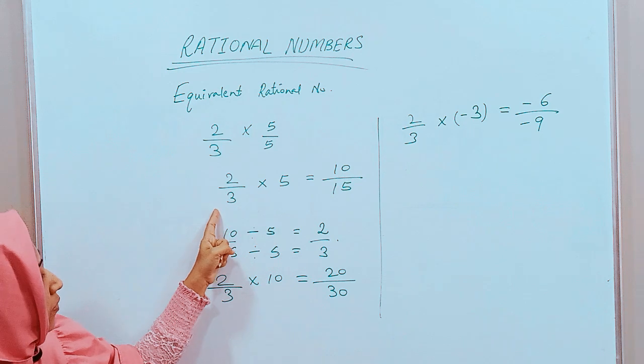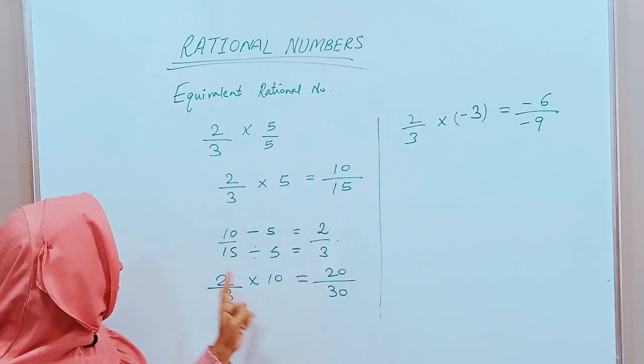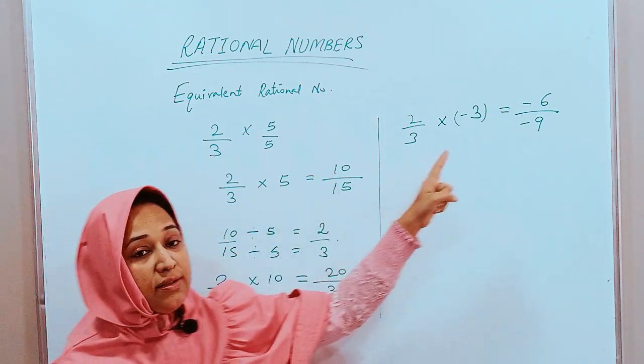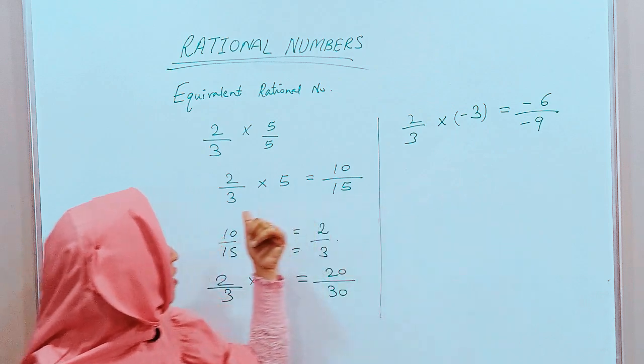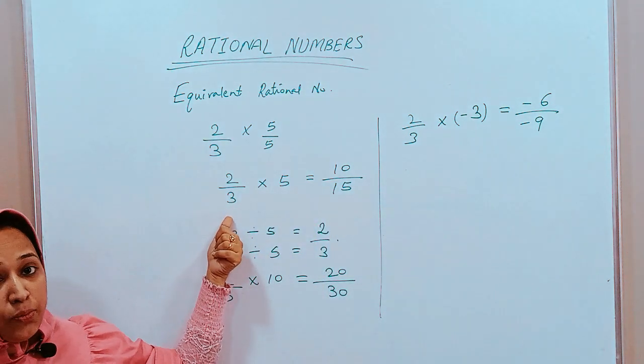So, we can say that 2 by 3, 10 by 15, 20 by 30, minus 6 by minus 9. All these are equivalent to 2 by 3.